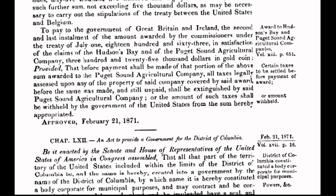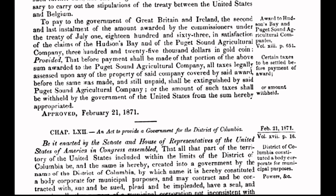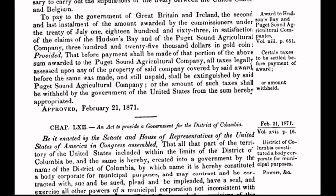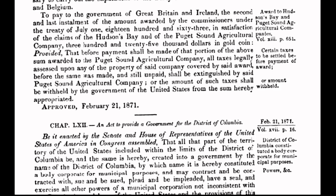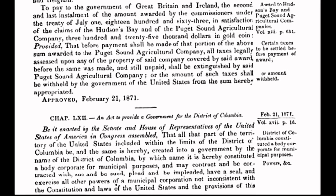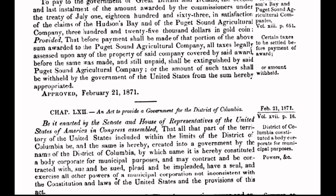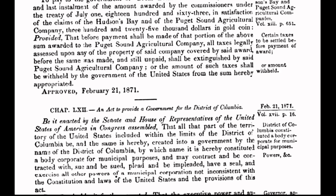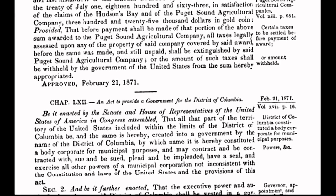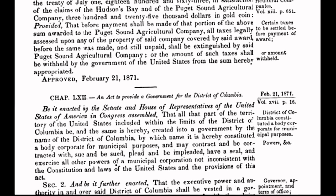It was at that time a strategic move by foreign-interest international bankers, who were intent upon gaining a stranglehold on the coffers and neck of America. Congress cut a deal with the international bankers, specifically the Rothschilds of London, to incur a debt to said bankers.